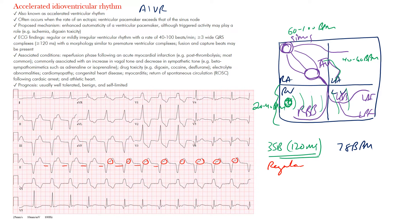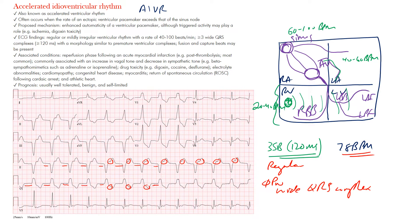There may be P waves occurring after the QRS complex — likely from retrograde conduction — but no P waves preceding the wide complexes. So we have wide QRS complexes, a regular rhythm, a rate of about 78 beats per minute, and P waves that may appear within the ST segment due to retrograde conduction back to the atria.